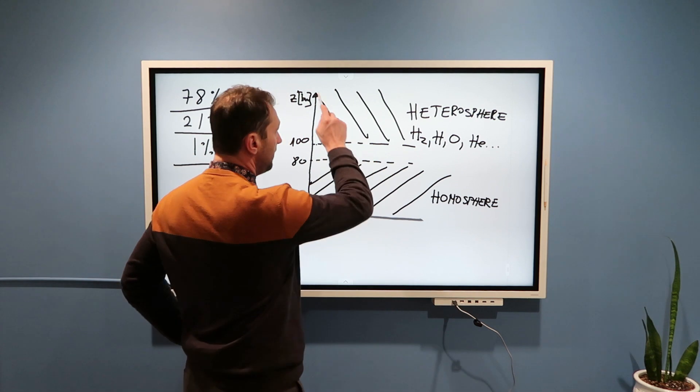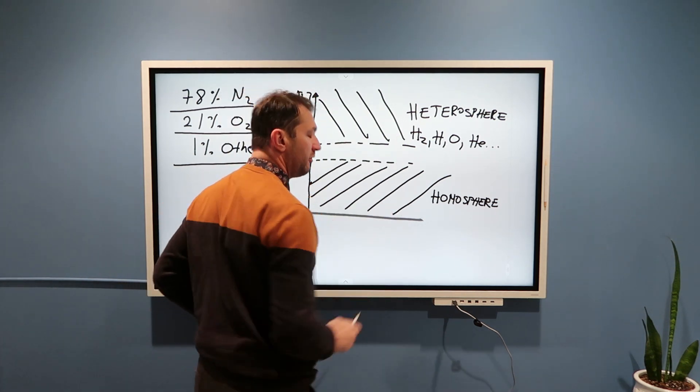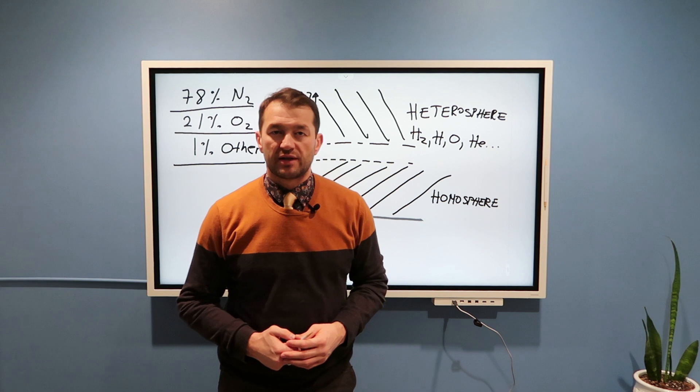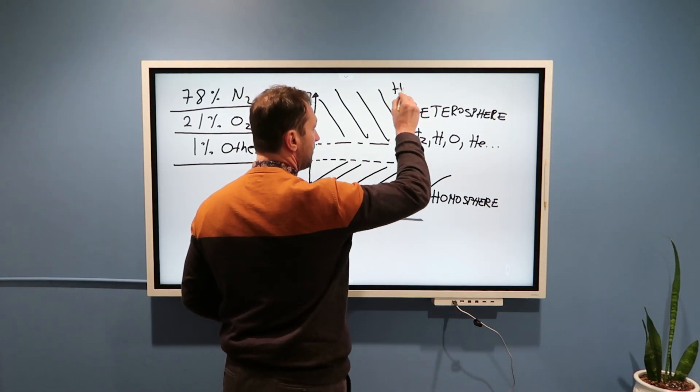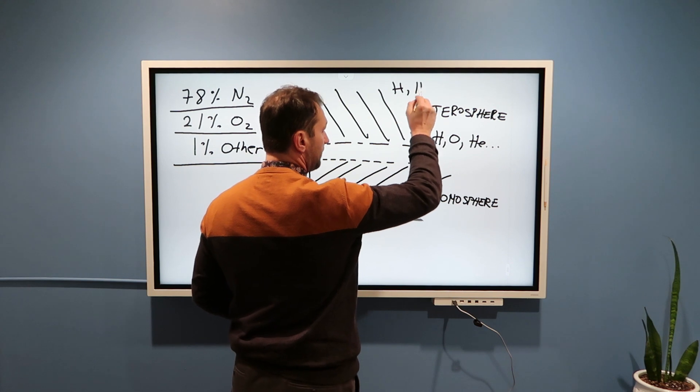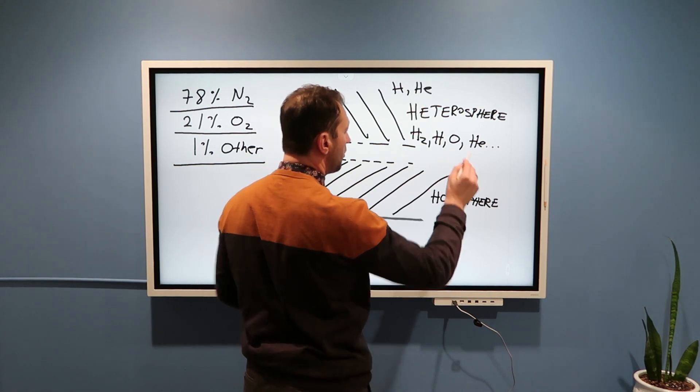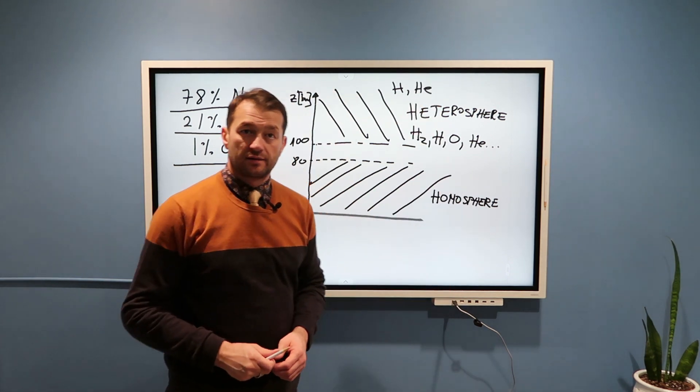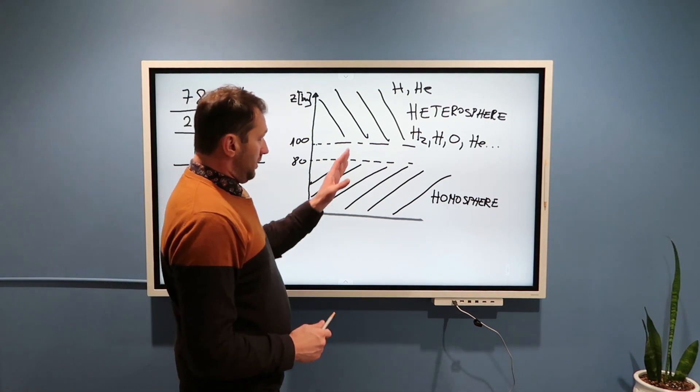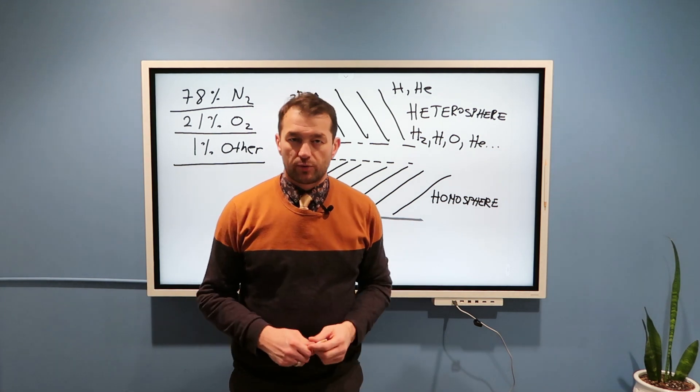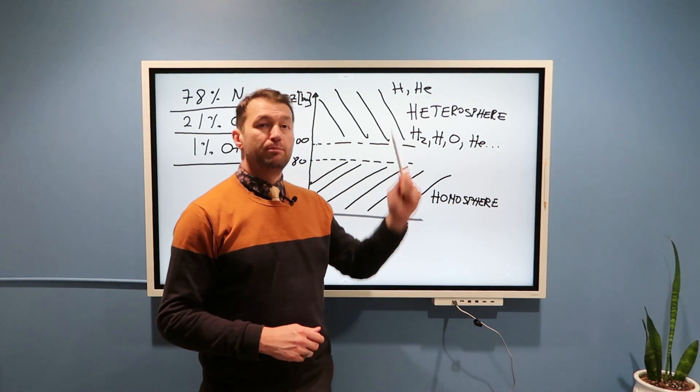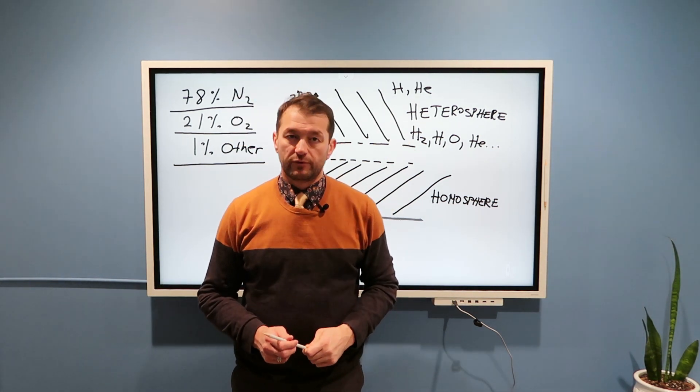When we get to the top of the atmosphere, which is between 6,000 and 10,000 kilometers, we mostly have pure hydrogen and helium, no more oxygen or anything like that. That is because these two elements are the lightest elements and the most abundant elements in our beautiful universe.